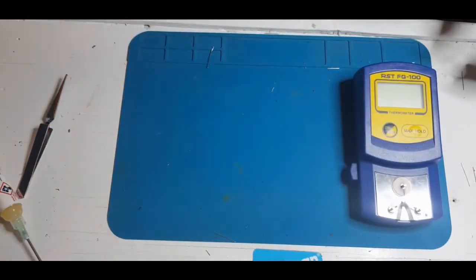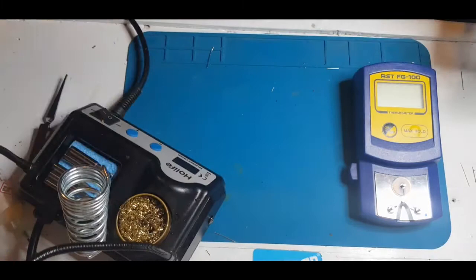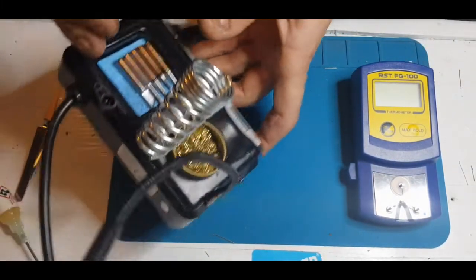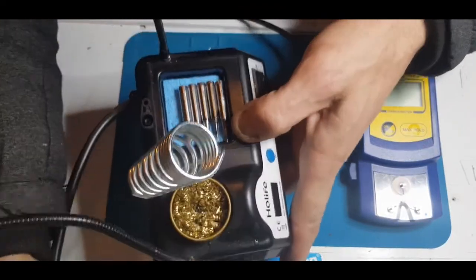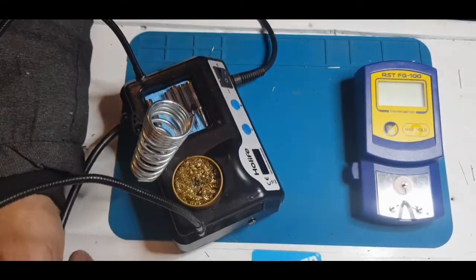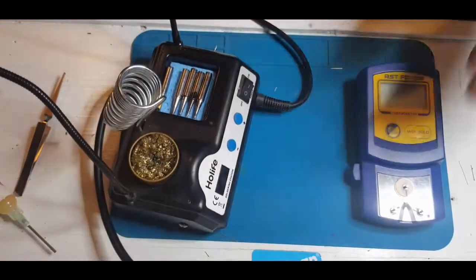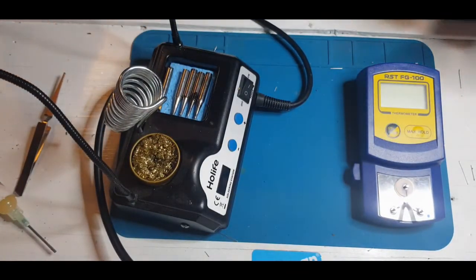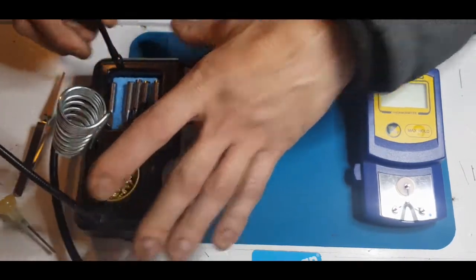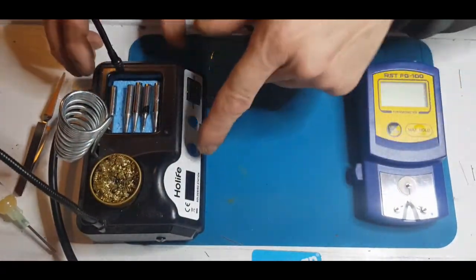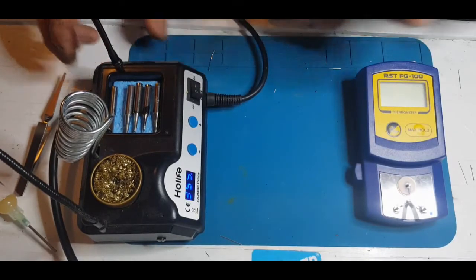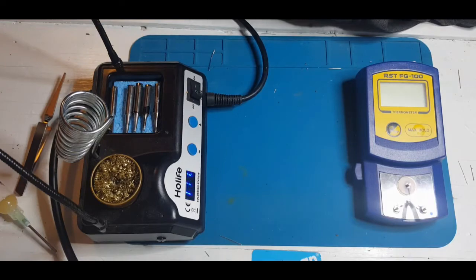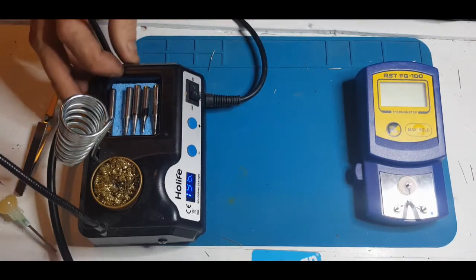Now let's bring this soldering iron station into camera view if I can. This ain't going to be easy because there's wires everywhere. Let's see what we've got there. Well I can't see that properly. There we go. So I've currently got this set to 355 Celsius.